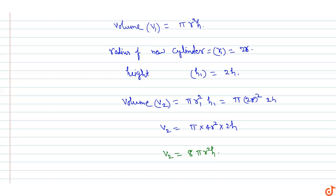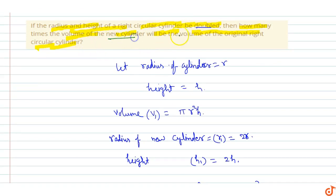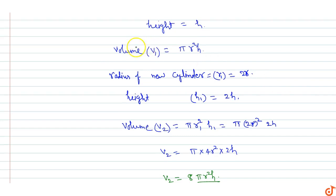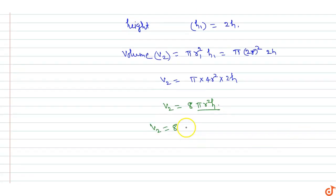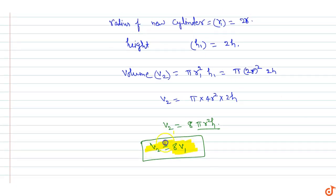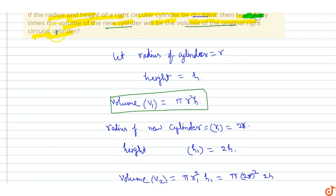This is the volume V2 of the new cylinder. Now, V2 equals 8 times pi R squared H, which is 8 times V1, the volume of the original cylinder. So the answer is: the volume of the new cylinder will be eight times the volume of the original cylinder.